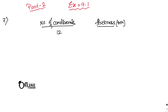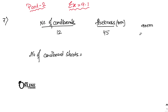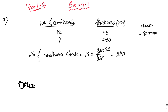For 12 cardboards the thickness is 45 millimeters. We need to find how many sheets would give 90 centimeters thickness. Since 90 centimeters equals 900 millimeters, write 900 and a question mark. Since cardboard sheets and thickness are in direct variation, number of sheets equals 12 multiplied by 900 divided by 45, which gives 240. So 240 is the answer.